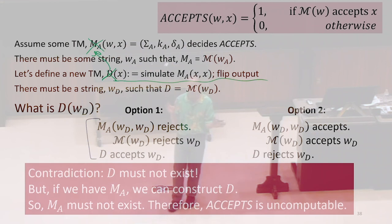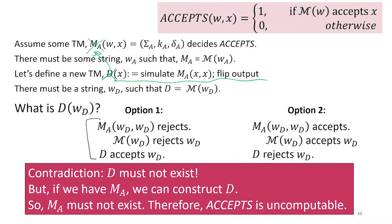And all we said about what MA was, was some machine that computes accepts. So that means MA must not exist, which means there's no machine that computes accepts. So this is a pretty shocking result. So we should take a video break. Make sure we appreciate its significance.